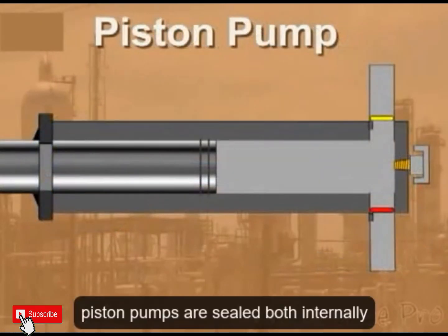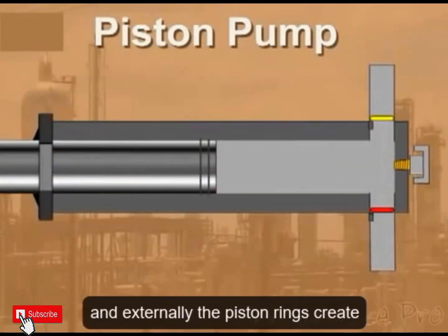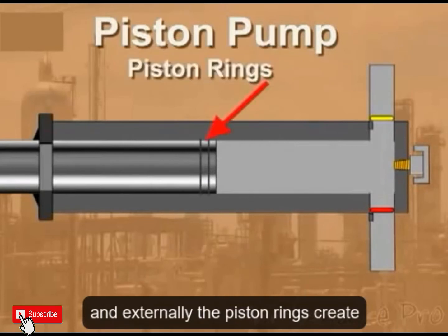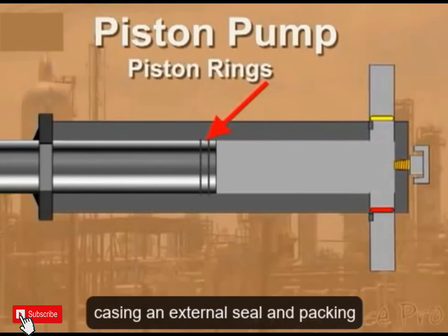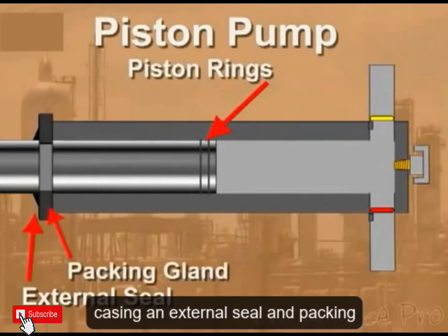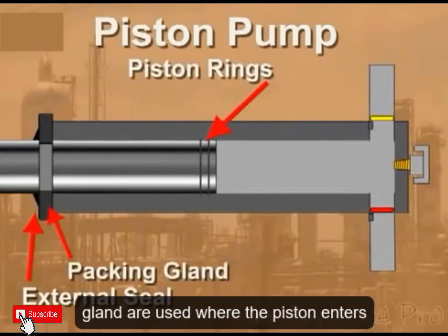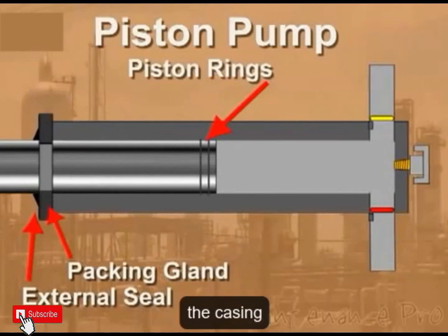Piston pumps are sealed both internally and externally. The piston rings create an internal seal with the piston and casing. An external seal and packing gland are used where the piston enters the casing.